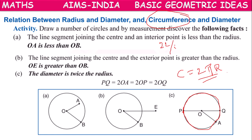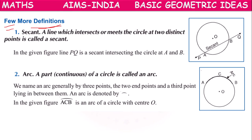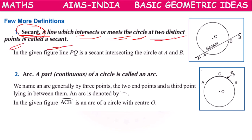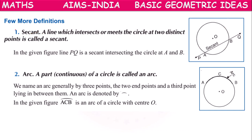Where π stands for 22/7. Next we have a definition called secant (S-E-C-A-N-T). A line which intersects or meets the circle at two distinct points is called a secant. Any line drawn through the circle which intersects it at two points is called a secant of the circle.